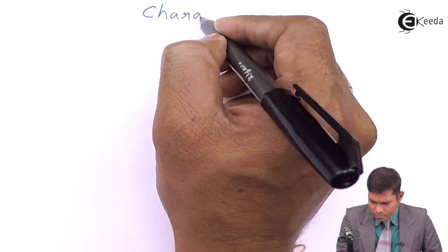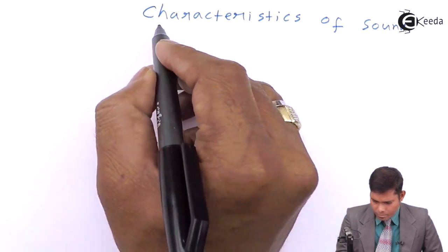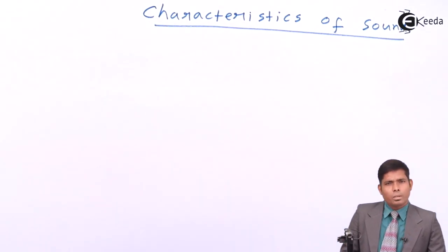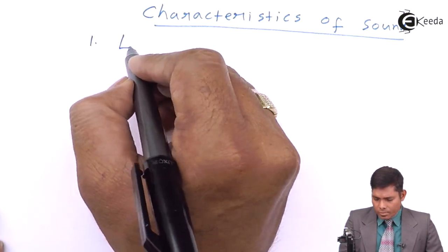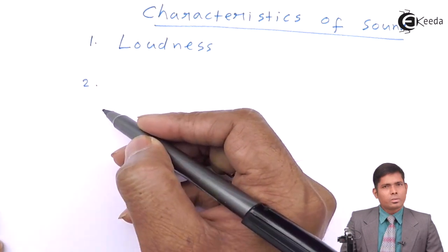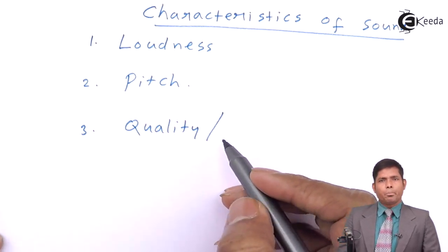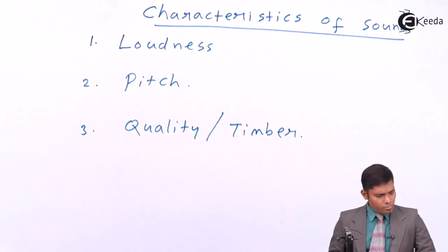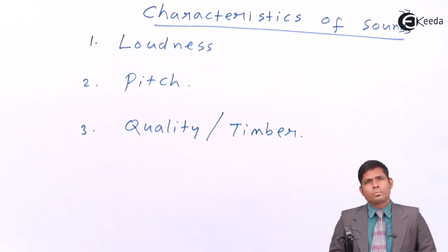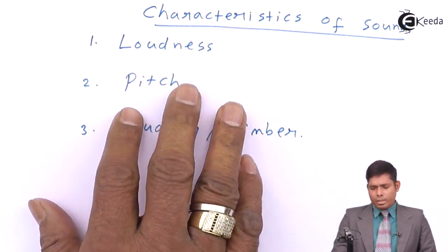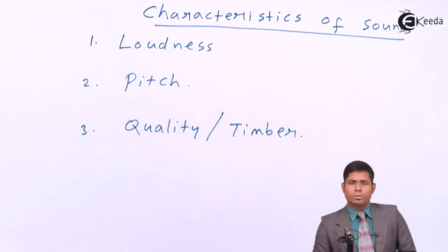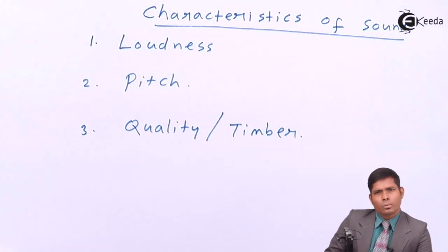Now, characteristics of sound — there are three characteristics of sound we will study. The three things we have to underline and discuss: first is loudness, the second is called pitch, and the third one is called quality, sometimes called timbre.